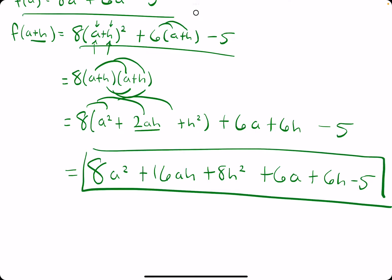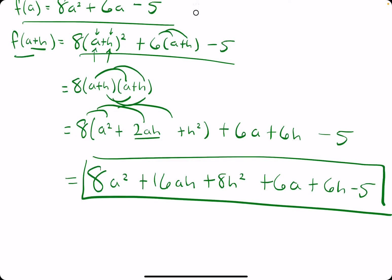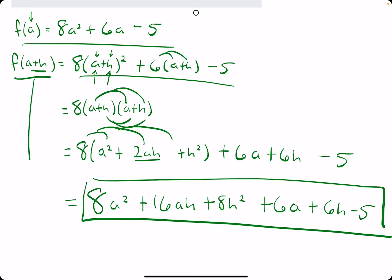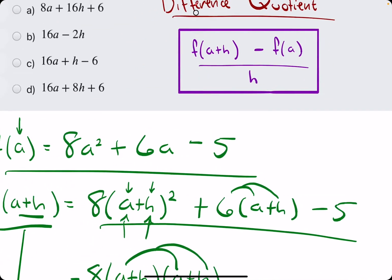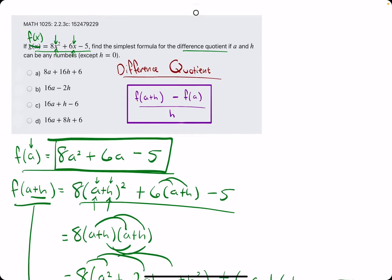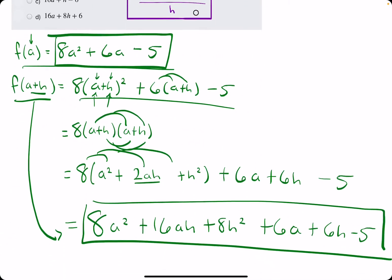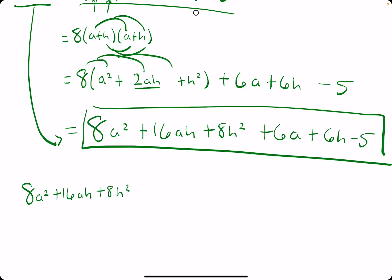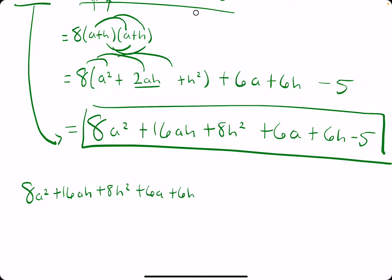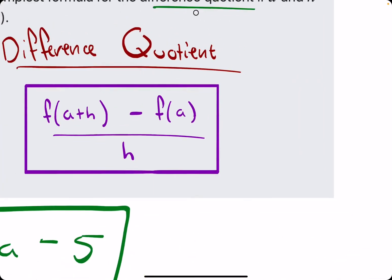So, this expanded expression, again, is f of a plus h. So, we're going to plug this in for f of a plus h. We'll plug in this for f of a, which is there. And then we'll divide it all by h. So, the difference quotient will be 8a² plus 16ah plus 8h² plus 6a plus 6h minus 5.